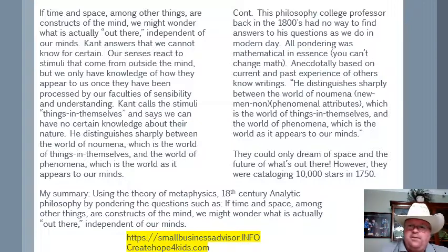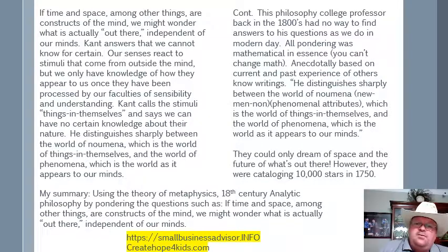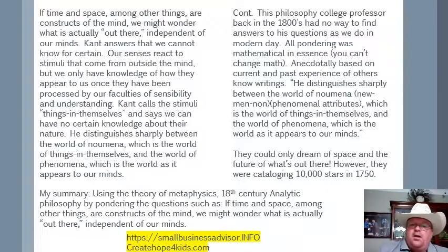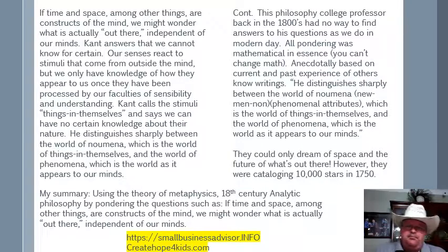Continuance of my summary: using the theory of metaphysics, 18th century analytic philosophy, by pondering the questions such as if time and space are constructs of the mind, we might wonder what is actually out there, independent of our minds. The philosophy college professor back in the 1800s had no way to find answers to his questions as we do in modern day — all pondering was mathematical in essence. You can't change math, so 7 plus 5 is 12; it's always going to be 12. They could only dream about space and the future. You had to really understand what was real and what's not real — we understand that by manifesting things in our mind it can come true, but we have to have a very firm grip of reality, and I kind of think that's what this class teaches.